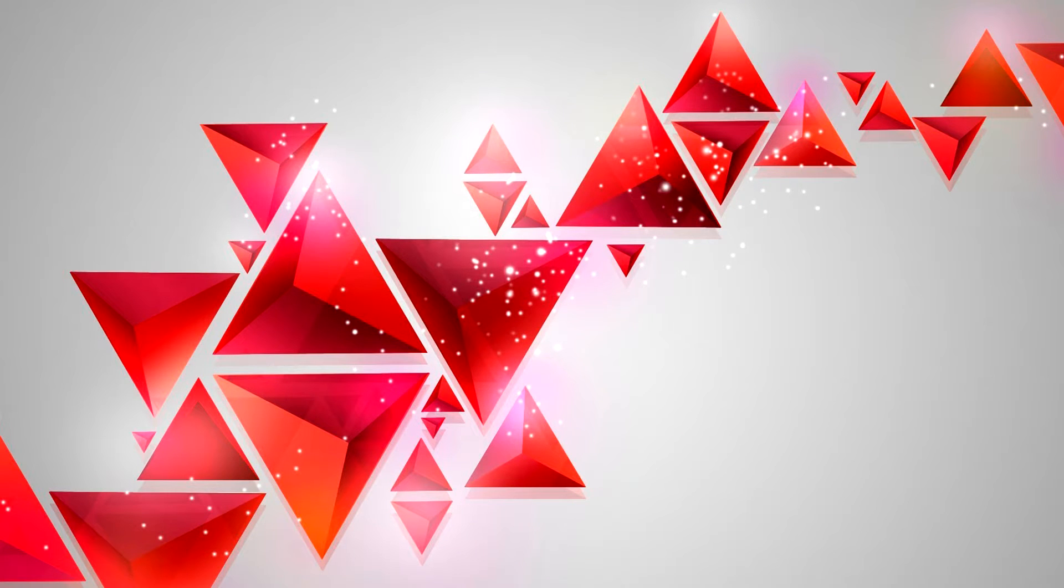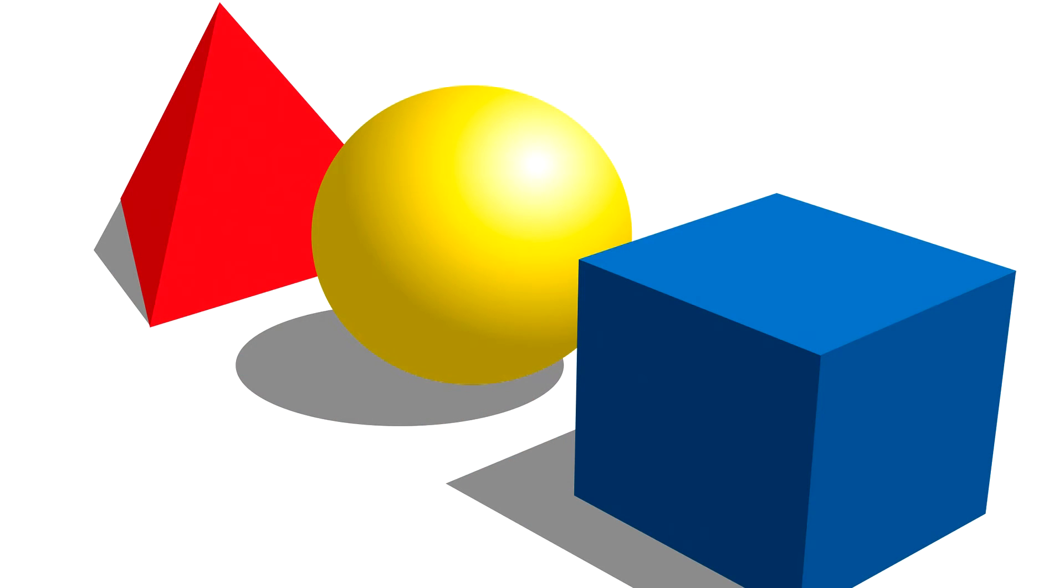Geometric shapes are two-dimensional. That means they are flat. There are many different kinds of shapes. There are circles, squares, rectangles, triangles, pentagons, and more.